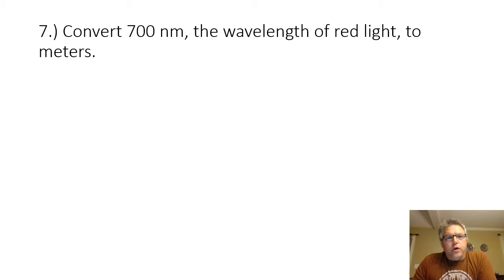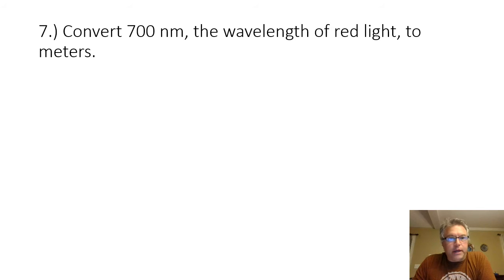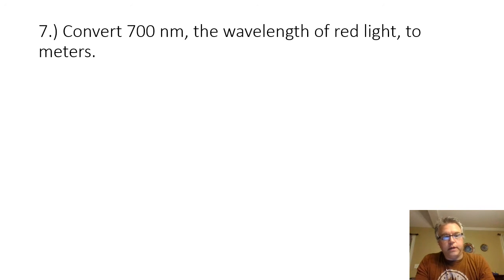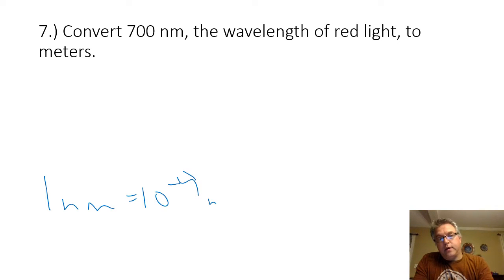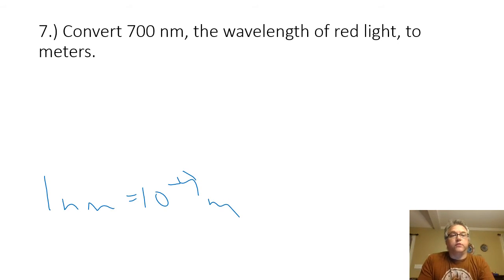Number seven: convert 700 nanometers of the wavelength of red light to meters. This is a simple conversion problem — no real formula needed. The only thing I need to know is that one nanometer is equal to 10 to the minus ninth meters. So when I want to convert 700 nanometers to meters, I can use that conversion factor.